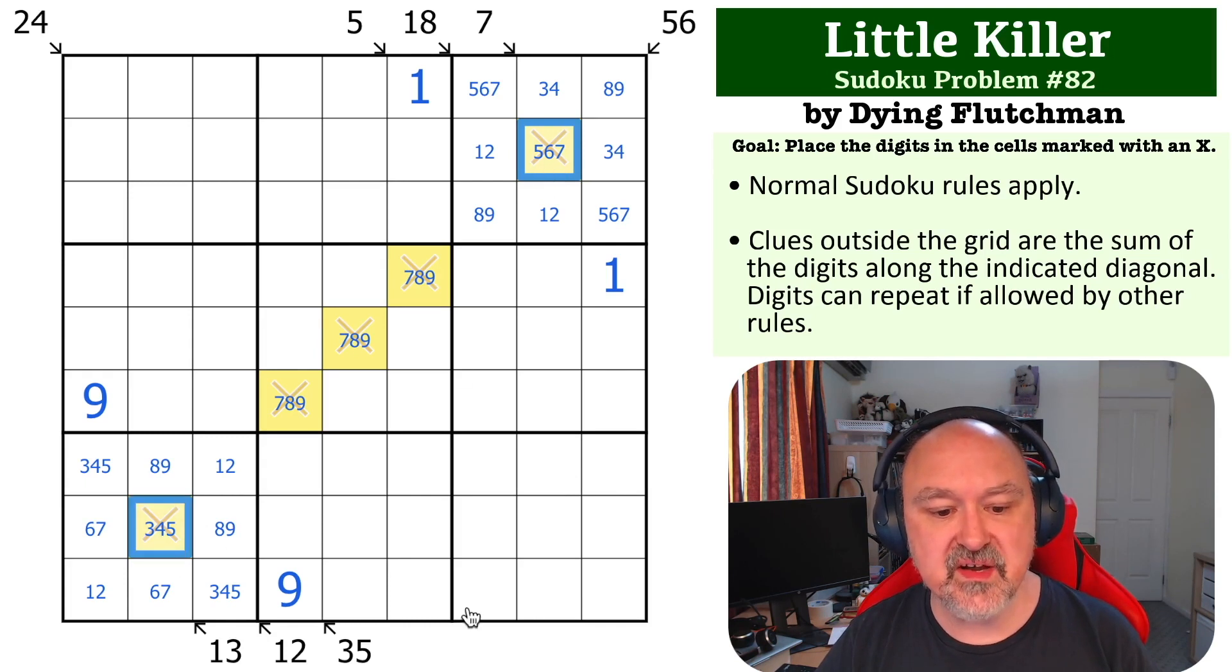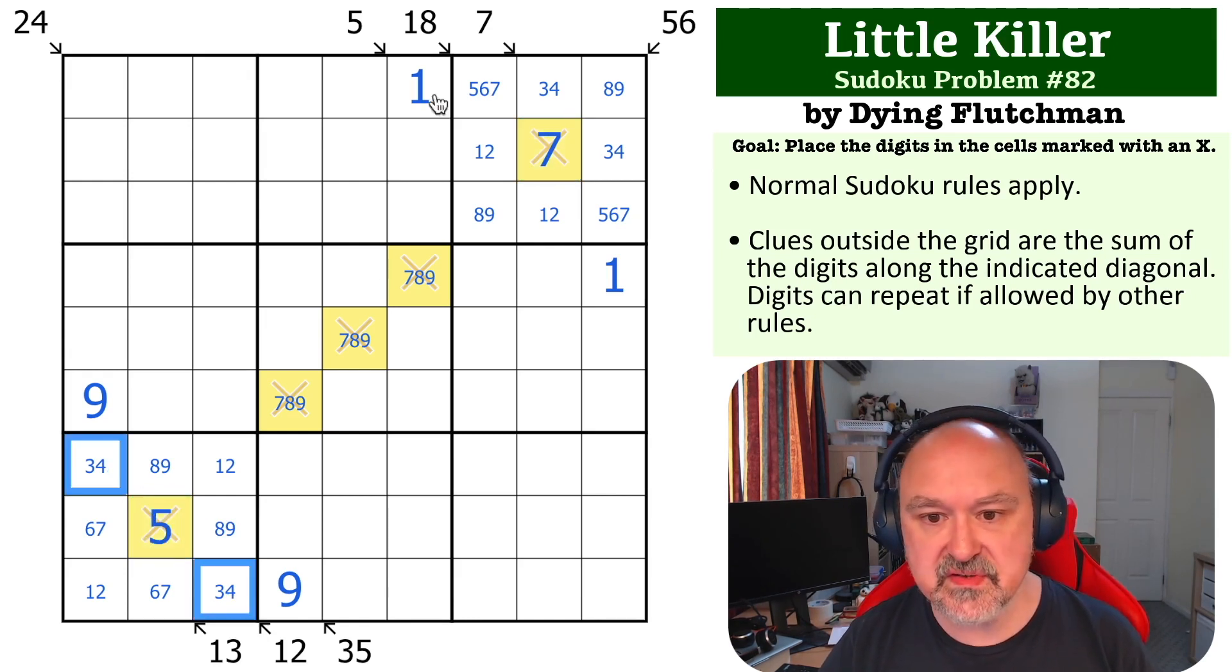But the maximum we can put there is 7, and the maximum we can put there is 5. So these must be maximum because that is exactly 12. That takes 5 out of those and it takes 7 out of those.